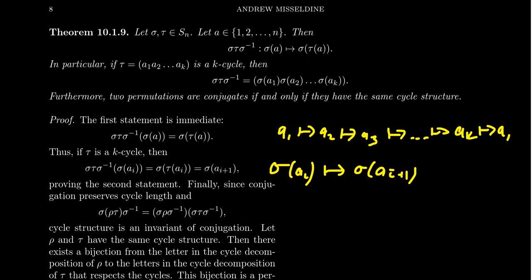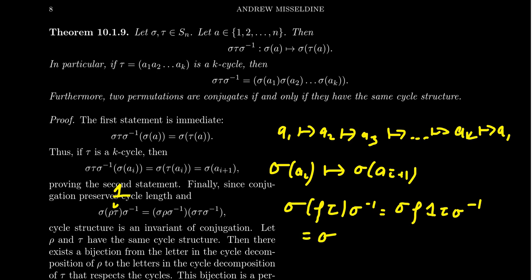What if you take a general permutation? Every permutation can be factored into a product of disjoint cycles. Conjugation is very compatible with this product. If you conjugate a product of two permutations rho and tau, you can insert a strategic identity — specifically sigma inverse sigma — so that sigma rho tau sigma inverse becomes (sigma rho sigma inverse)(sigma tau sigma inverse). So you can consider the conjugate of each factor separately.